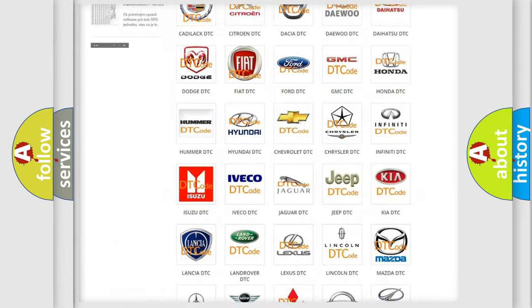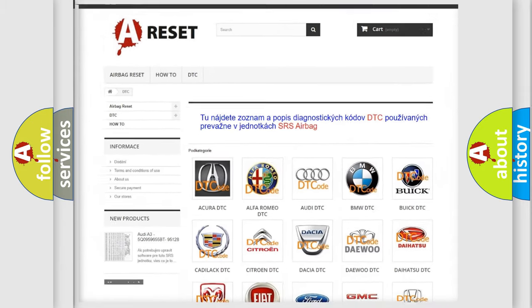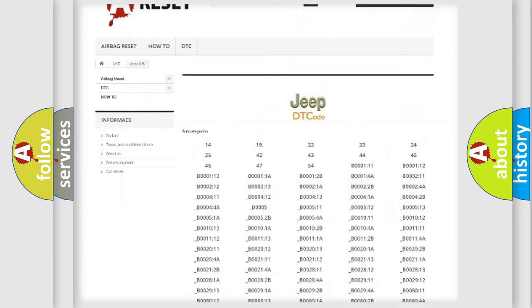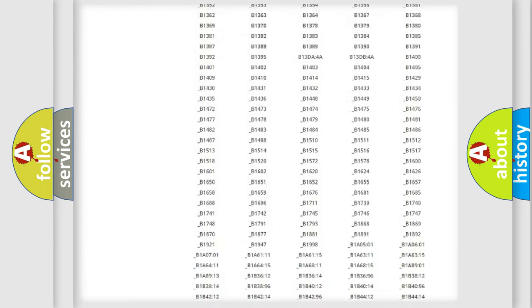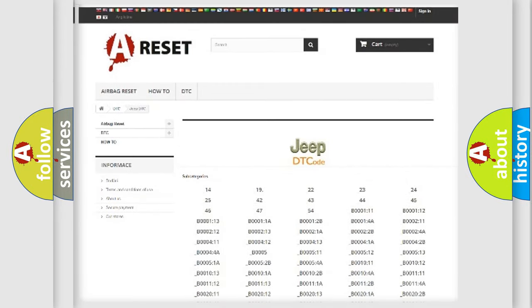Our website airbagreset.sk produces useful videos for you. You do not have to go through the OBD2 protocol anymore to know how to troubleshoot any car breakdown. You will find all the diagnostic codes that can be diagnosed in Jeep vehicles, and many other useful things.